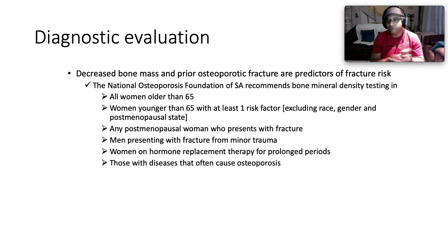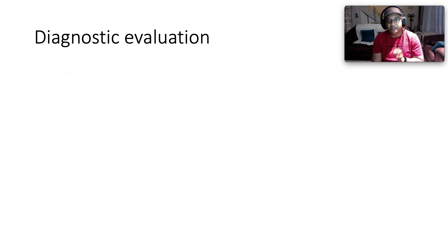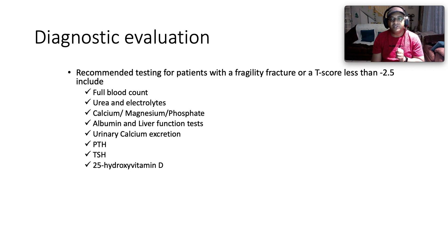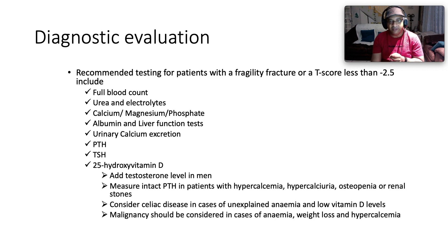Also indicated: any postmenopausal woman presenting with a fracture, men who present with fracture after minimal trauma, women on hormone replacement therapy for prolonged periods, and those with diseases that often cause osteoporosis. Hip and spine DEXA scan is the preferred test for bone mineral density. Additional recommended tests include FBC, urea and electrolytes, calcium, magnesium, phosphate, albumin, liver function, urinary calcium excretion, TSH, and 25-hydroxyvitamin D levels.